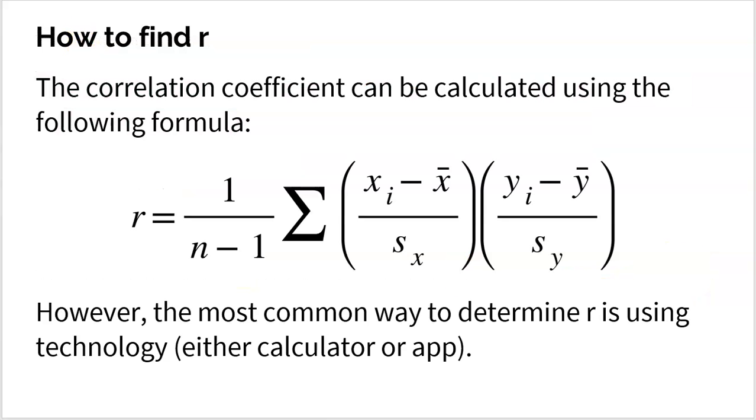Now, big question, how do you find R? Well, the correlation coefficient can be calculated using this extremely ugly formula. I don't even want to waste my time walking through it, but it essentially uses Z scores for your X values, Z scores for your Y values, multiplies them together, adds them together, divides by N minus one, a whole bunch of junk.